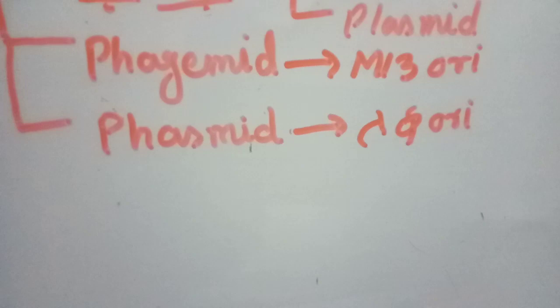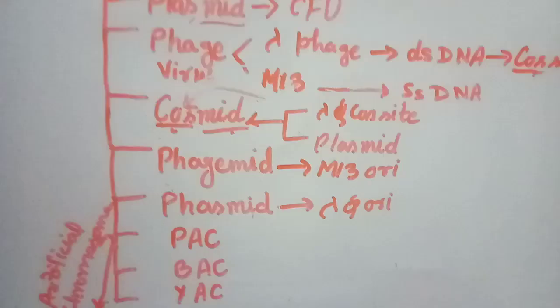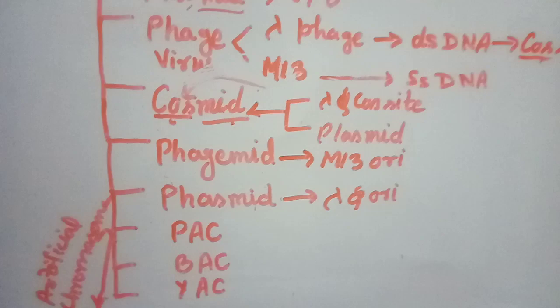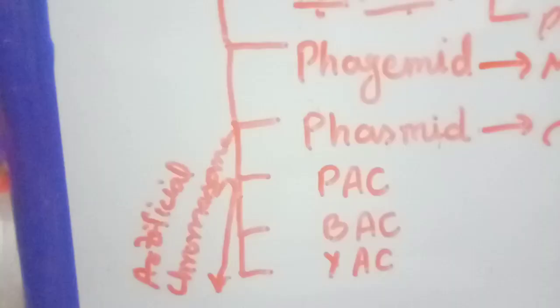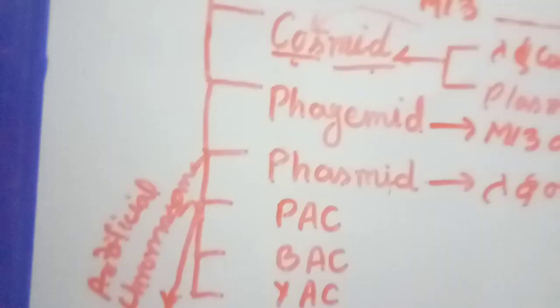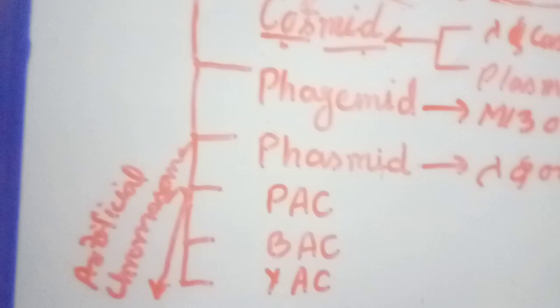This phagemid has M13 ori while phasmid has lambda phage ori. Further with the advancement of the vector, there are artificial chromosomes.